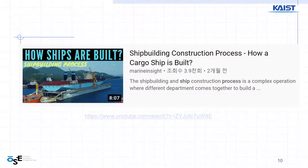Traditionally, the people doing structural work and outfitting are very different. If you think about construction of a building, they start by building the structure first — the concrete and steel structure. After that, they put in piping, the skin of the building such as windows and tiles, then electrical cabling, air conditioning, and finally the furniture. That is the usual sequence.